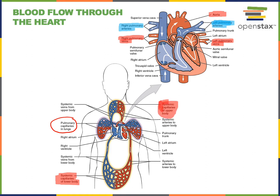You'll notice that the color of the blood in the illustration changes at the capillaries. At the systemic capillaries, blood changes from red to blue. The blood draining into the veins and returning to the heart from the systemic capillaries is shown in blue. Here are the systemic veins from the upper body, and here are the systemic veins from the lower body.